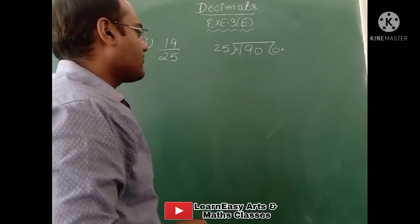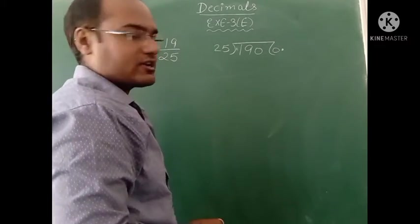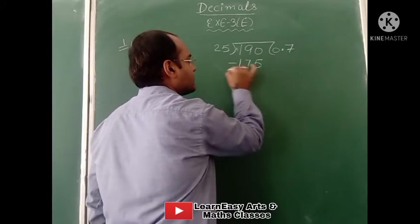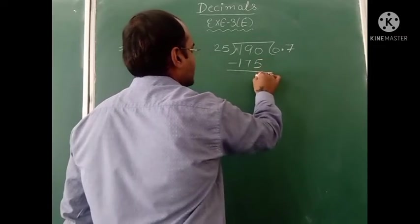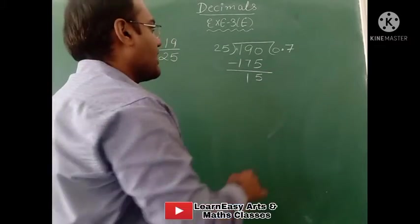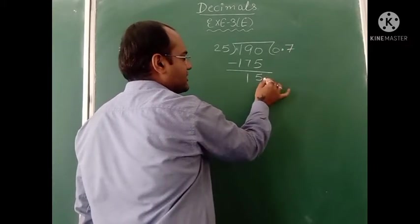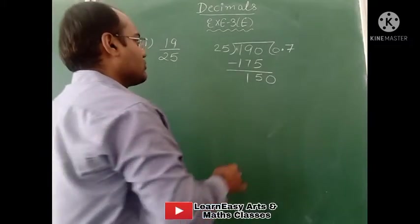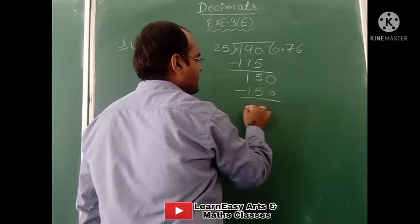25 times 7 is 175. On subtracting these two numbers, we get 10 minus 5 is 5, and 8 minus 7 is 1, so 15 is the remainder. Since there is already one decimal in the answer, we can add 0 in this step. Now this becomes 150. 25 times 6 is 150. On subtracting, remainder is 0.